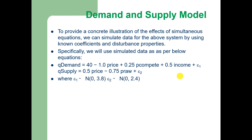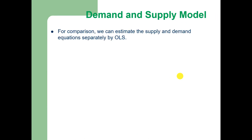Epsilon 1 is normally distributed with zero mean and variance equal to 3.8, whereas epsilon 2 is normally distributed with zero mean and variance equal to 2.4. This is simulated data. For comparison, we can estimate the supply and demand equations separately by OLS, using the same simulated data and the ordinary least squares method.